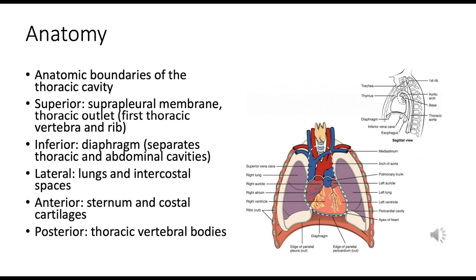The inferior boundary is the diaphragm — a dome-shaped muscle crucial for breathing that contracts and flattens when we inhale, relaxes and domes up when we exhale, and serves as the division between the thoracic and abdominal cavities. The lateral boundary consists of the lungs filling the majority of the thoracic cavity, with intercostal spaces between each rib containing intercostal muscles, nerves, and blood vessels.